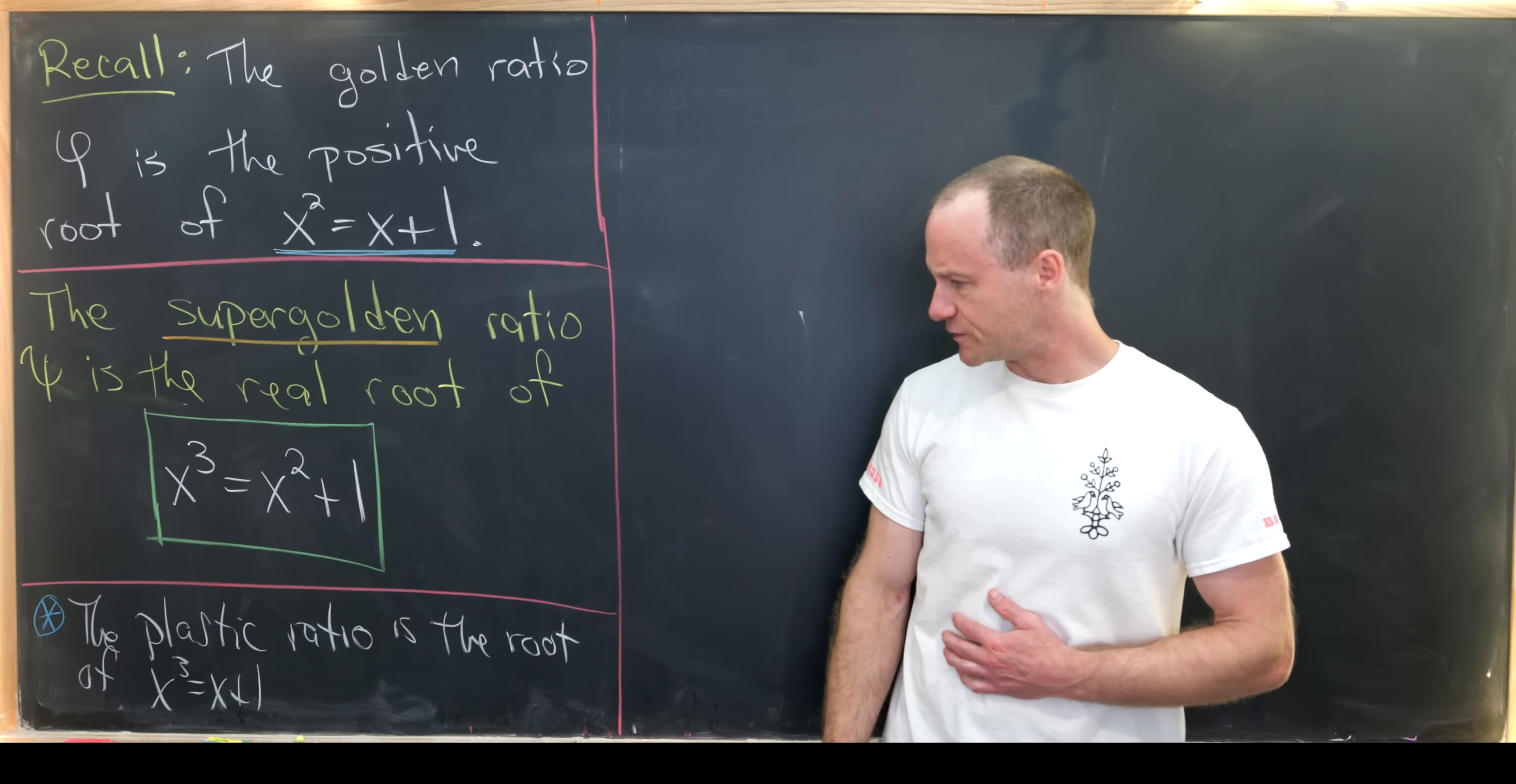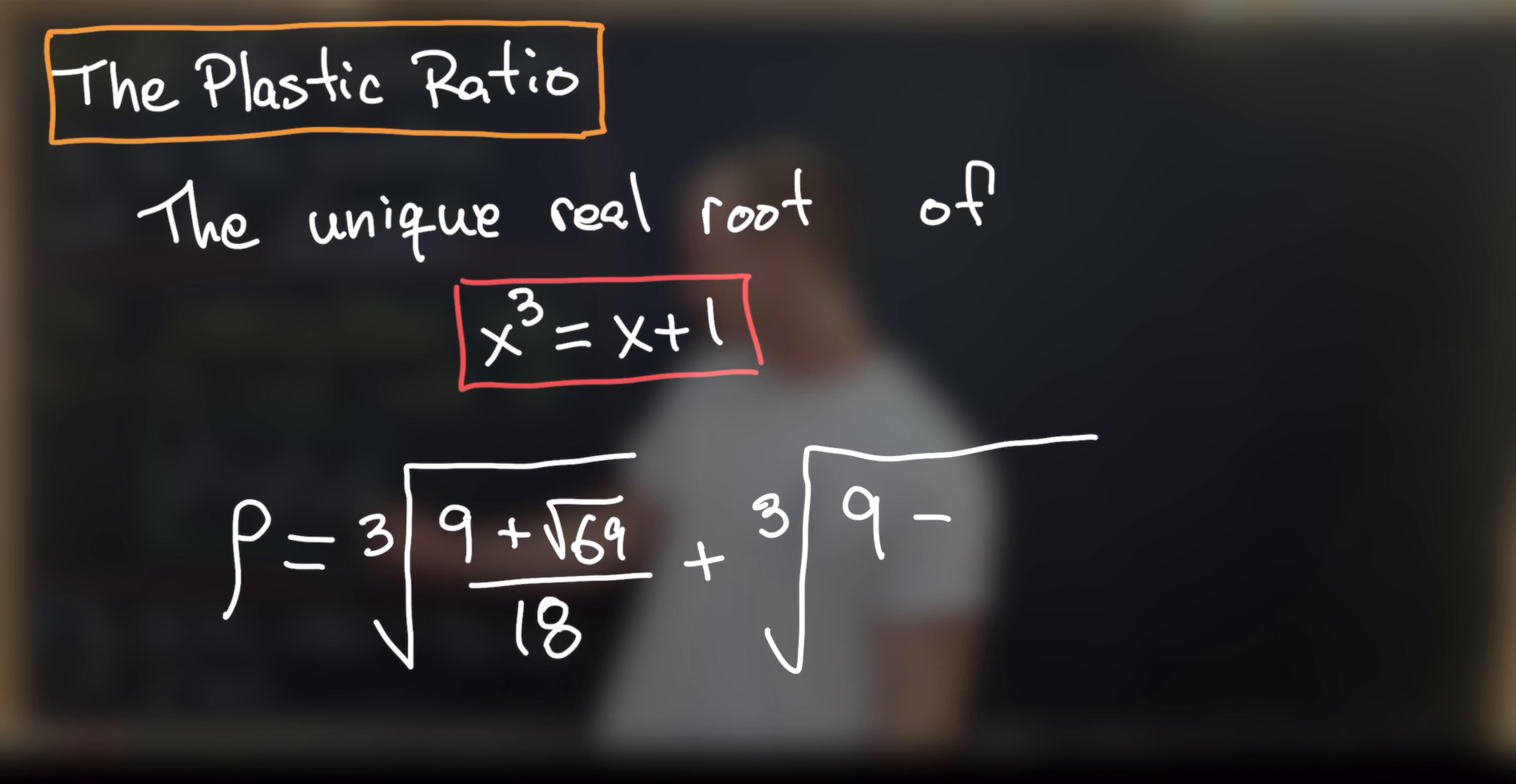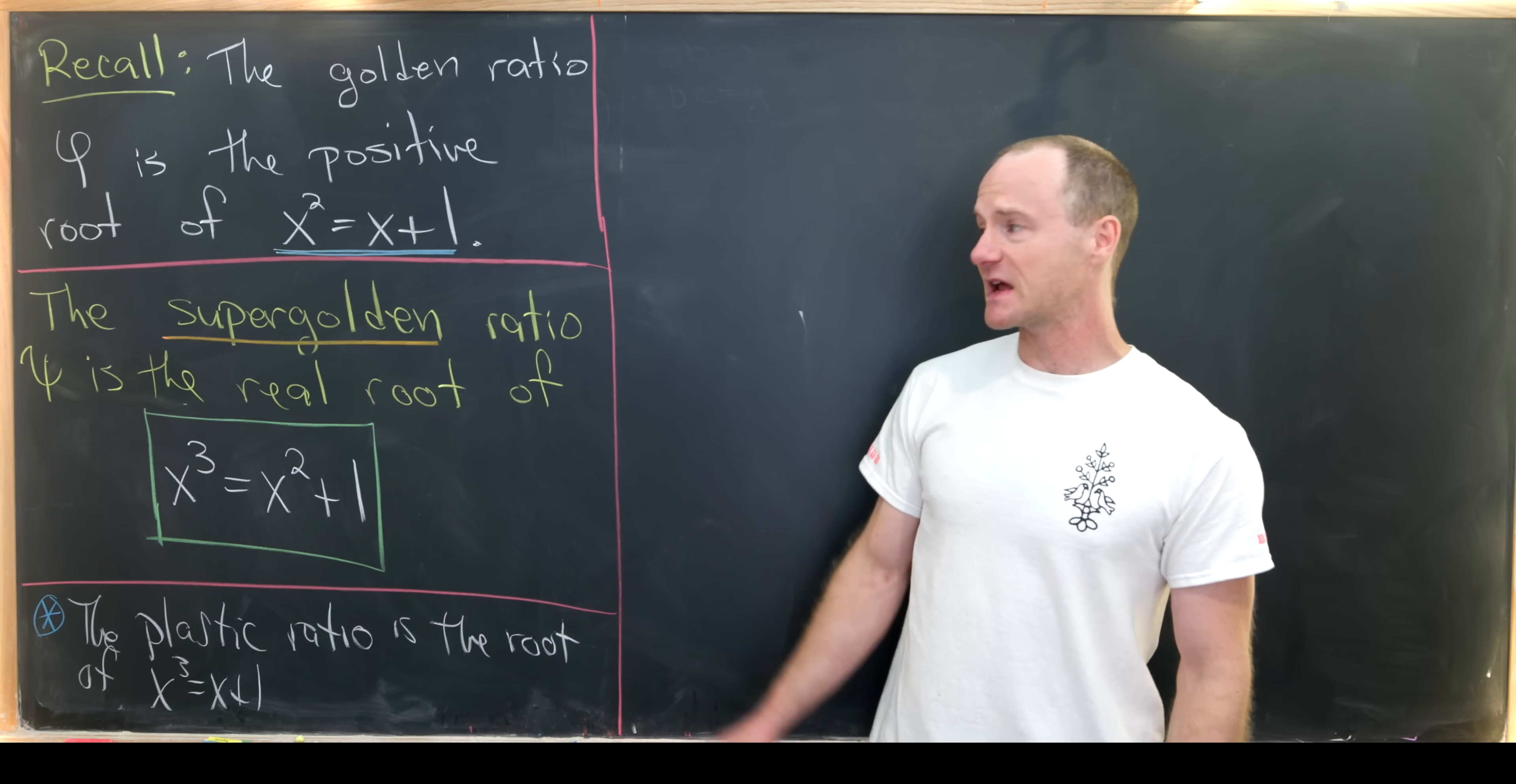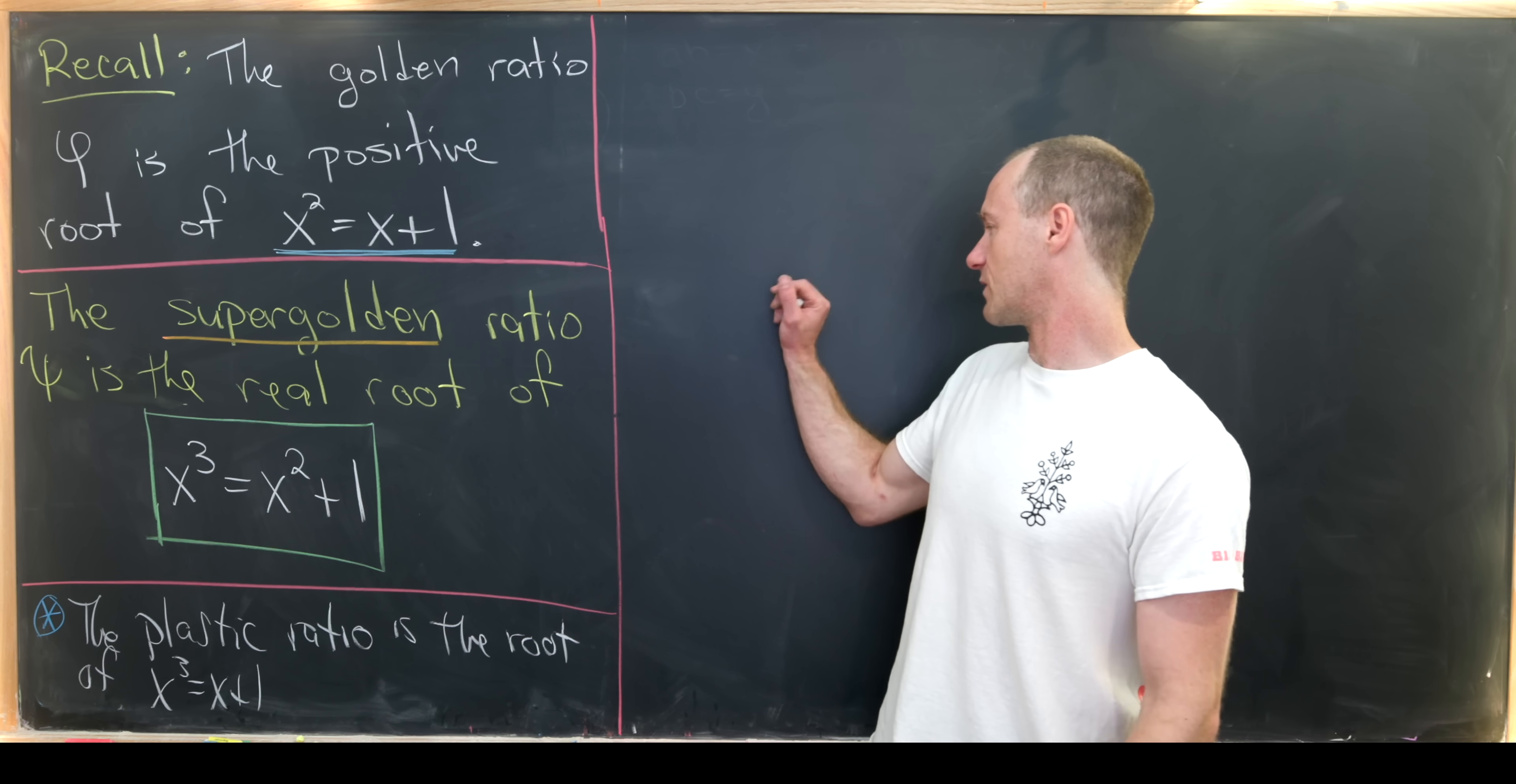But before we do that, I'd like to point out that there's this thing called the plastic ratio. I haven't made a video about the plastic ratio, but other channels have. And that's a root to a somewhat simpler cubic equation. This cubic equation is x cubed equals x plus 1. Okay, so like I said, our big goal here is to find this closed form for the super golden ratio.